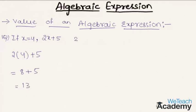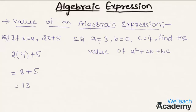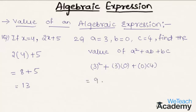Let us solve another example. If a is equal to 3, b is equal to 0, and c is equal to 4, find the value of a square plus ab plus bc. Substituting the values, we get 3 square plus 3 into 0 plus 0 into 4, which simplifies to 9 plus 0 plus 0, giving us 9 as the value of the expression.